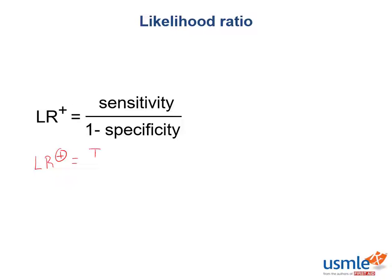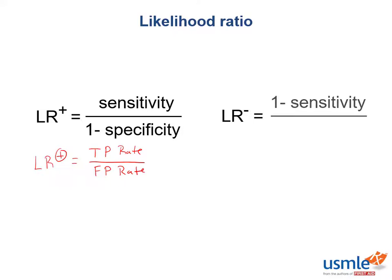Another way to look at this is it's equal to the true positive rate divided by the false positive rate. The likelihood ratio for a negative test result is the number of people with a disease who receive a negative test result, or 1 minus the sensitivity, divided by the number of people who don't have the disease and got a negative test result, or the specificity. This is also equal to the false negative rate divided by the true negative rate.